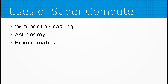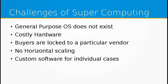A general purpose operating system framework did not exist for parallel computing needs. If a company was selling a supercomputer, it did not have a ready off-the-shelf operating system that could be readily installed as the supercomputer goes live — it was not as simple as that. The company procuring the supercomputer is also locked to a specific vendor for hardware support; if you buy from IBM, you have to go back to IBM for any hardware support.